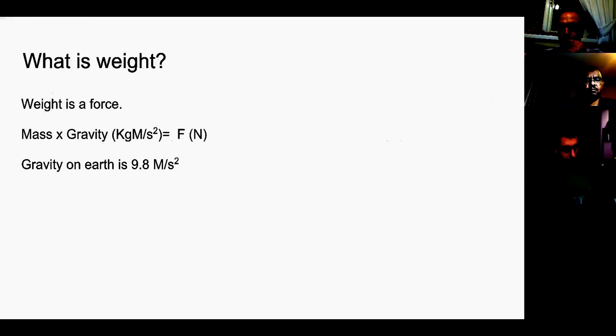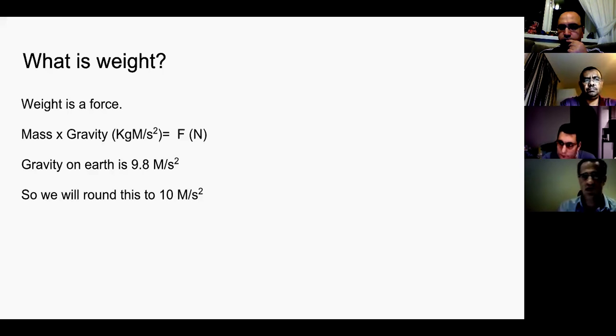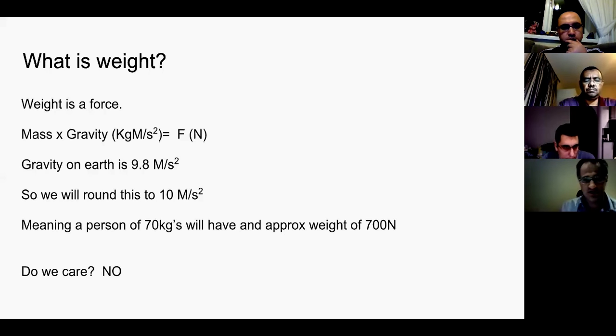Another thing to be aware of is weight. We interchange weight with mass all the time, but there is a difference between the two. Weight is a force — it is mass multiplied by gravity, which is meters per second squared. Gravity on Earth is 9.8 m/s², so to make life simple, we round it to 10 m/s². A person of 70 kg will have an approximate weight of 700 Newtons — but we won't be using detailed mathematics for these free body diagrams.